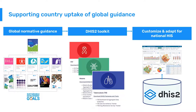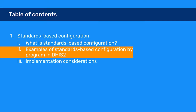In sum, the workflow for developing standards-based configuration tools is to start with the global normative guidance developed by WHO, often with UNICEF and other subject matter experts. The DHIS2 toolkit is a combination of downloadable metadata packages, design guidance, technical installation guides, and implementation guides that support the use and uptake of WHO's analysis standards into the HMIS. The third part of this process is customizing and adapting these modules for the national context.